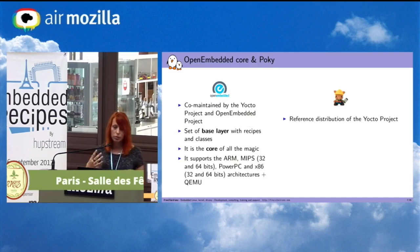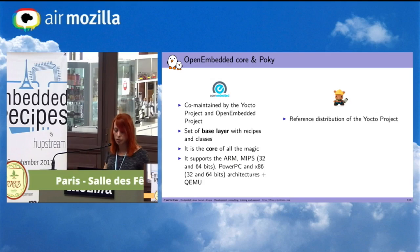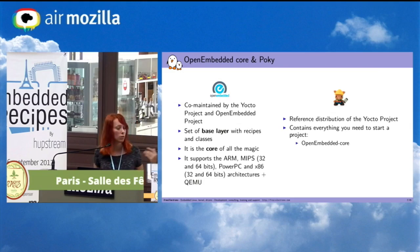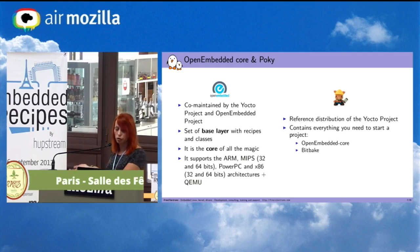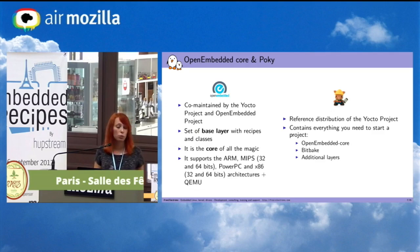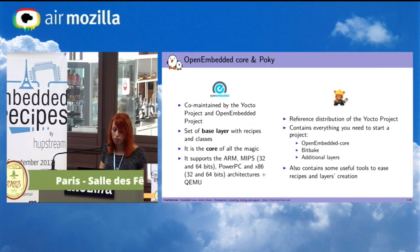Poky is the reference distribution of the Yocto project. It contains everything you need to start a project: OpenEmbedded Core, which is the core of all the magic; BitBake, which is a tool that will parse every recipe and compile applications to create a final image to flash on your board; some additional layers that provide extra recipes; and also useful tools to ease recipe and layer creation.